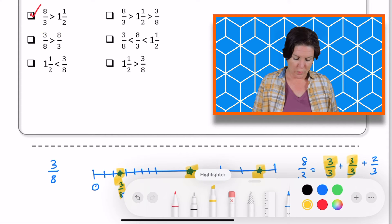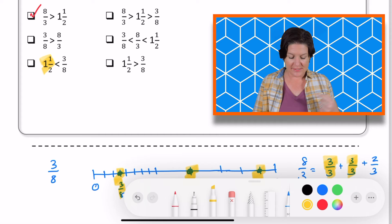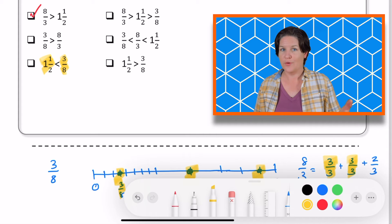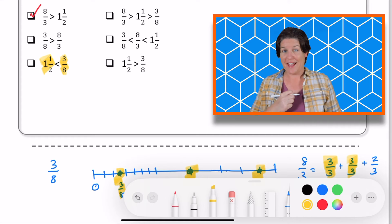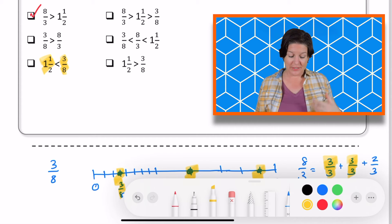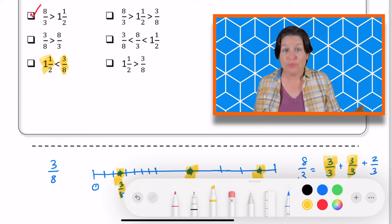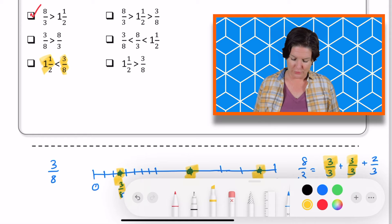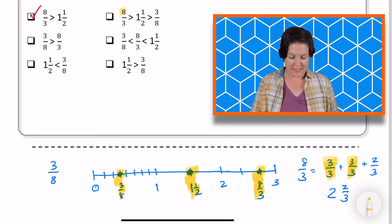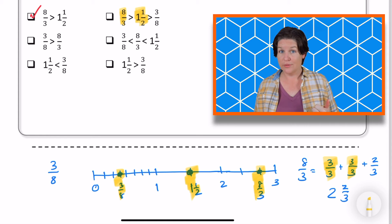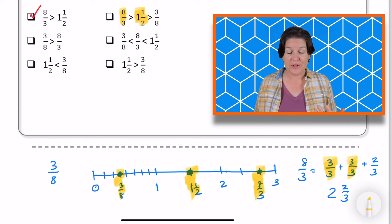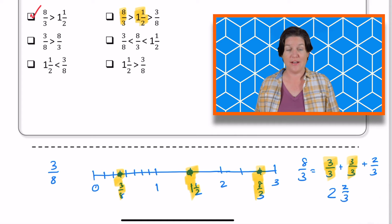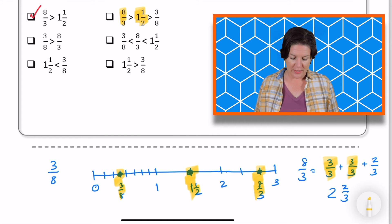Let me move on to one and a half is less than three eighths. What do you think? Keep that one or eliminate? Yeah, we need to eliminate that one because one and a half is greater than three eighths. So no to that one. Over here, it says eight thirds is greater than one and a half. Is that true? Yes, that is true. Eight thirds is greater than one and a half. I can see that on my number line that I've created.